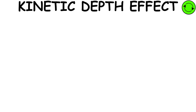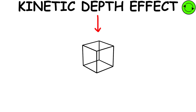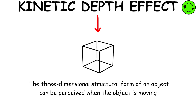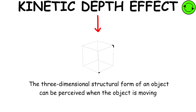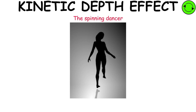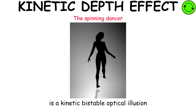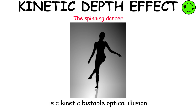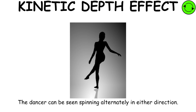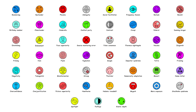Kinetic depth effect. The kinetic depth effect refers to the phenomenon whereby the three-dimensional structural form of an object can be perceived when the object is moving. The spinning dancer is a kinetic, bistable optical illusion resembling a pirouetting female dancer. The dancer can be seen spinning alternately in one direction or the other.